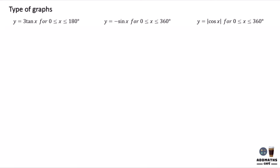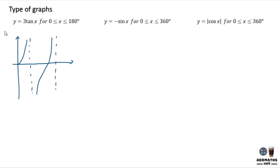Now you are required to sketch y equal to 3 tan x. 3x means the height will be 3, but for tangent there's no height — so what you do is just draw tangent x, because there's no amplitude change. This is 360 degrees, this is 180 degrees, with 0, y label, and x label.